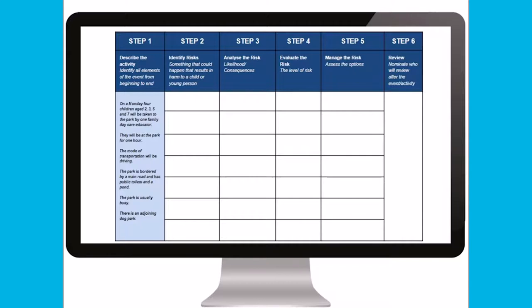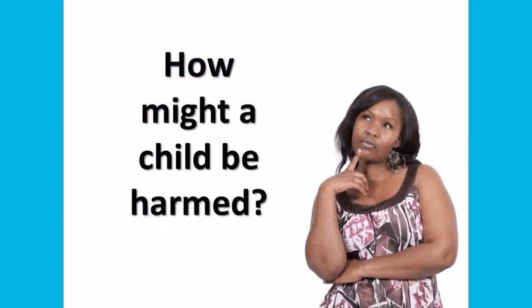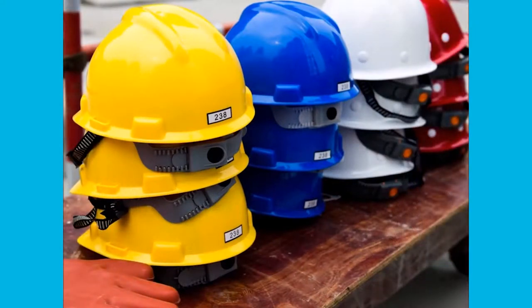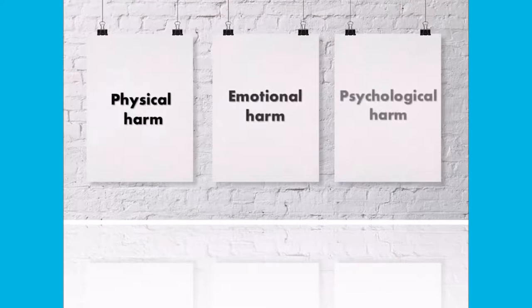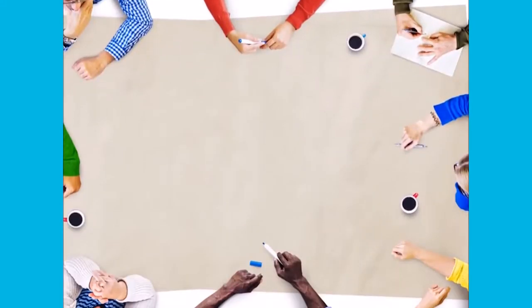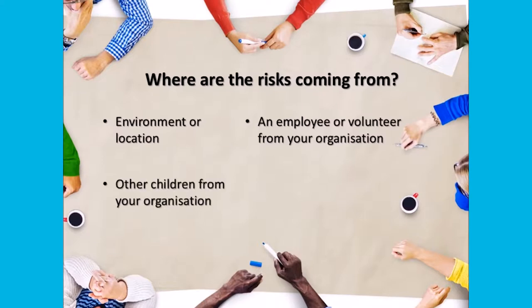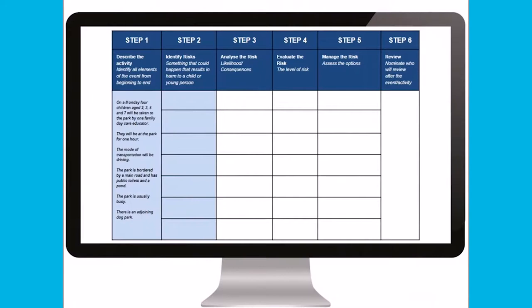Step two is to identify the risks. You need to consider how a child might be harmed. The risks identified in this plan are different to workplace health and safety processes, which generally consider environment and equipment risks. The risks you want to focus on are the risks of physical, emotional or psychological harm which may occur to a child. It is a good idea to involve and brainstorm with parents, staff and, if appropriate, children. You should consider where risks may come from — the environment, an employee or volunteer, other children from your organization, someone outside your organization, or the children themselves.